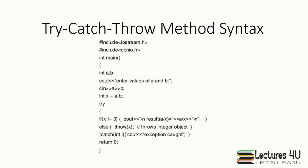In the try-catch-throw method syntax, we have a try block which is checking for any exception. The throw statement throws an integer object. At last, we have a catch method which will execute if the exception is found.